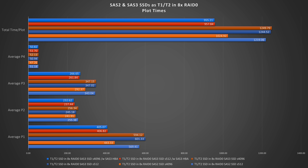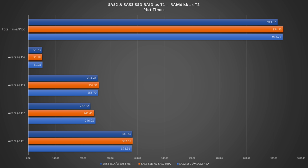Still, 955 seconds is nothing to sneeze at and this is completely without any RAM disk. If we look at the results with the RAM disk, here again we see the anomaly where the SAS 3 is actually slower than the SAS 2 — that is until we add the SAS 3 HBA.